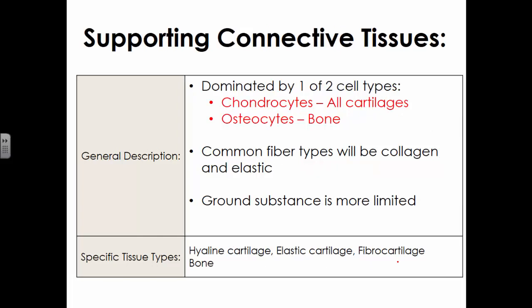Supporting connective tissues are dominated by one of two types of cells. We'll talk about cartilages and bone. All cartilage tissues will have chondrocytes as the dominant cell type, and bone will have osteocytes as the dominant cell type. Fiber options are limited to collagen and elastic, and the ground substance is generally described as limited — it's really going to be packed space in these tissues. The three types of cartilage are hyaline, elastic, and fibrocartilage, and bone is bone.